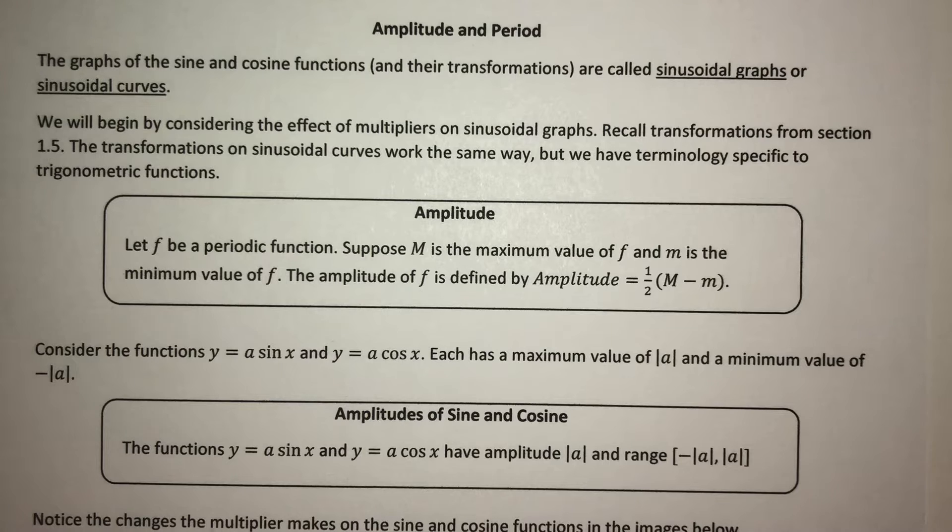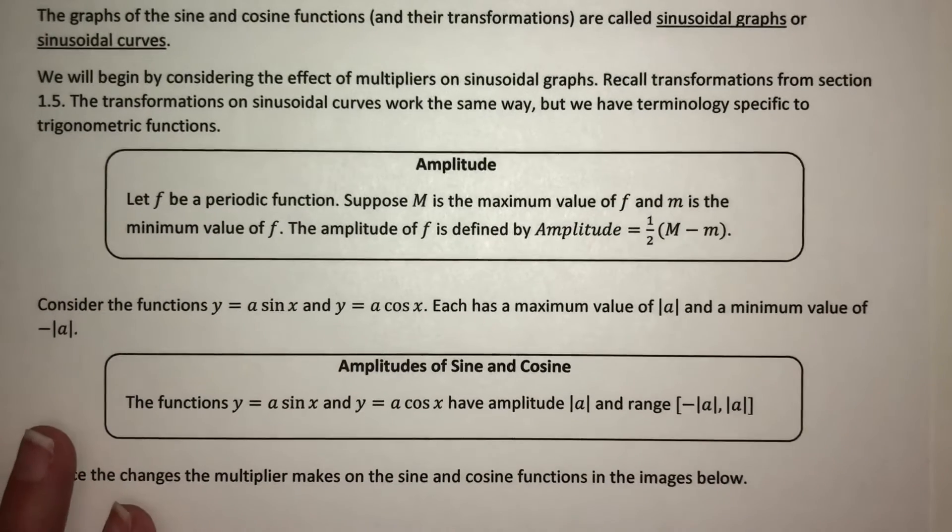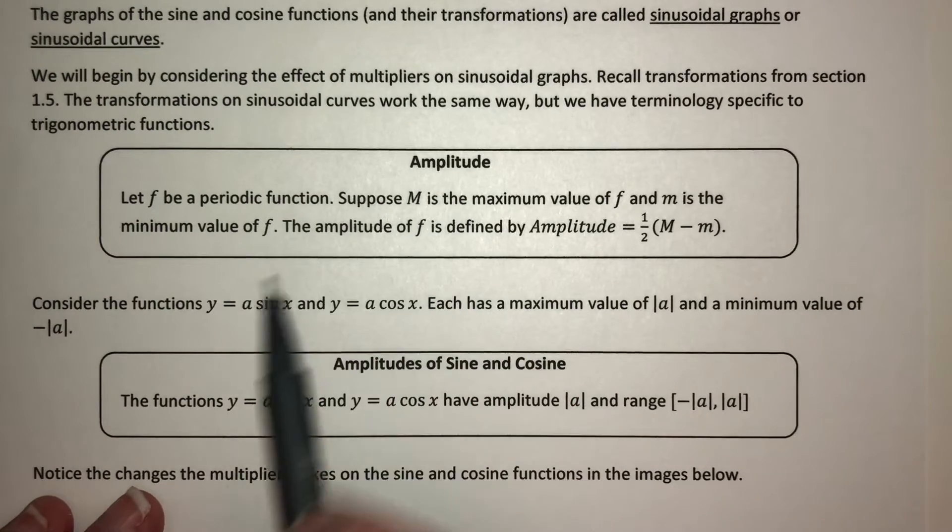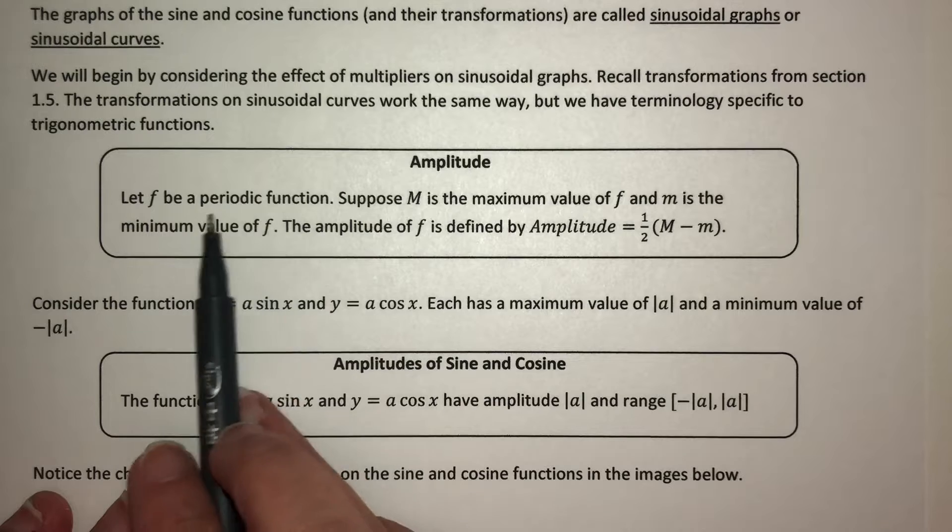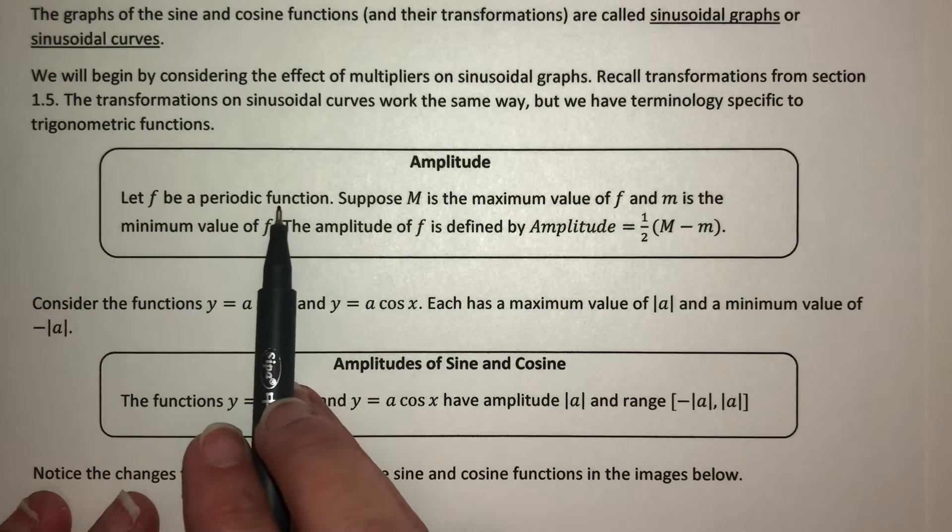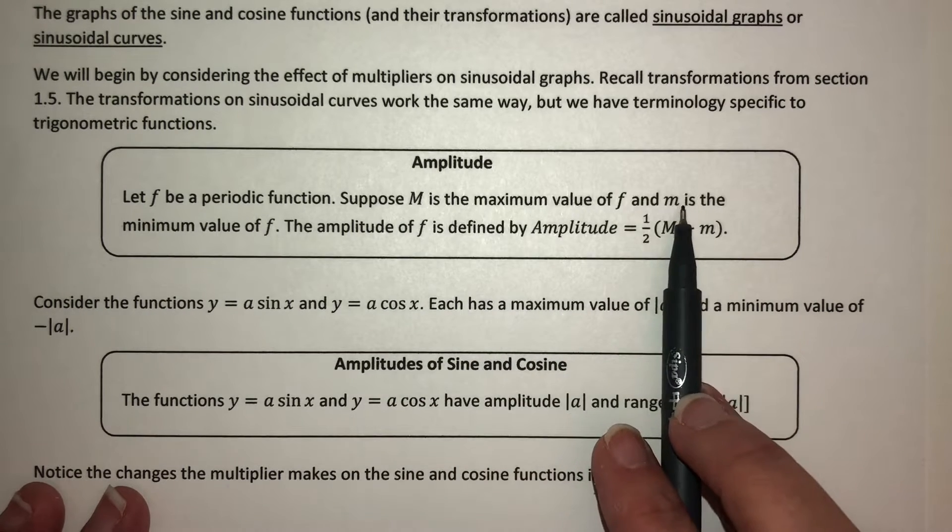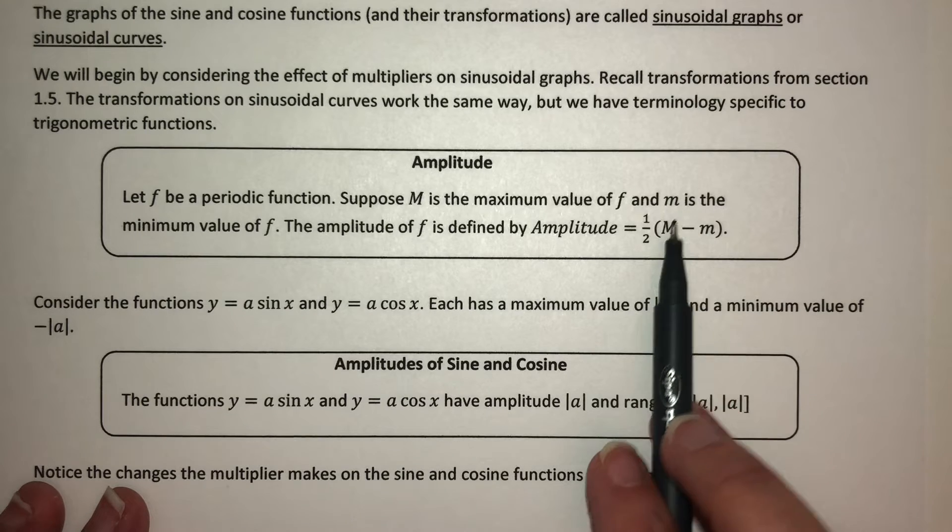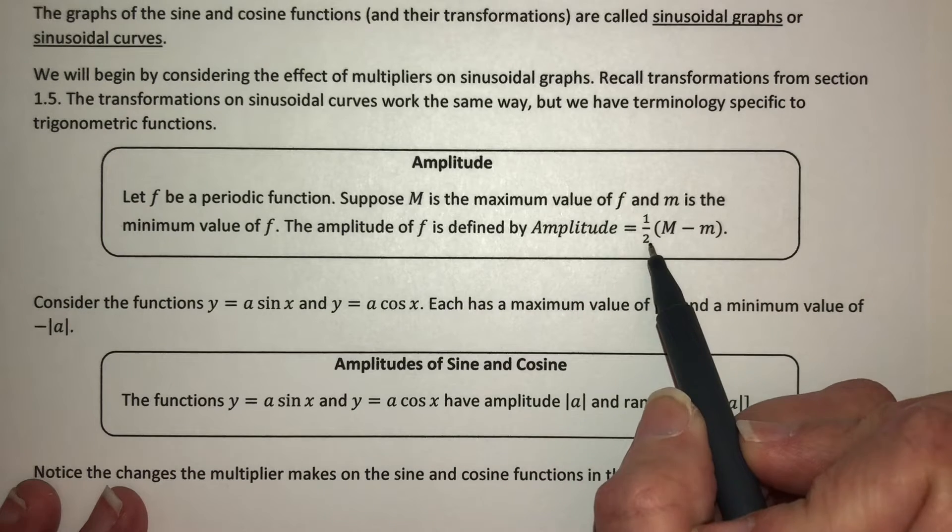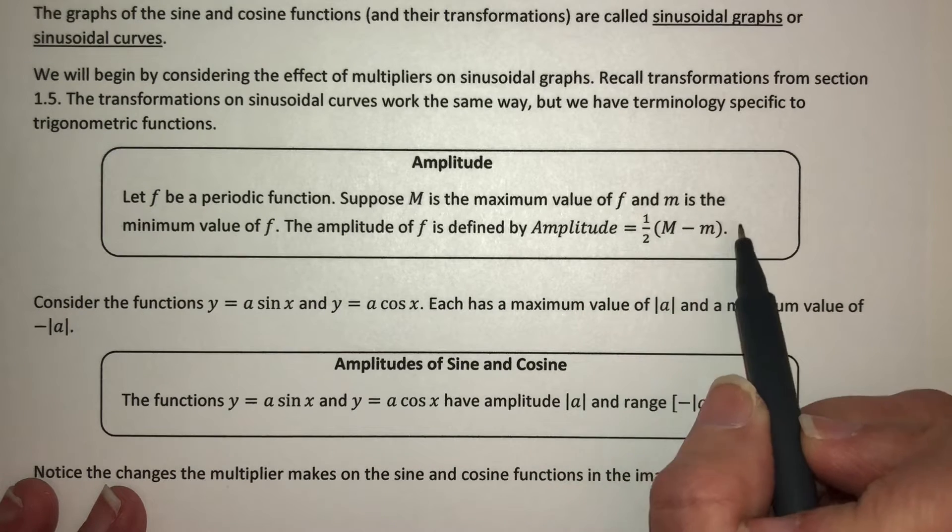We're going to consider the effect of multipliers on sinusoidal graphs. We're talking about the same kinds of transformations from section 1.5, and the transformations on these curves work the same way. Terminology is a little bit different. Definition: Amplitude. Let f be a periodic function. Suppose capital M is the maximum value of f, and lowercase m is the minimum value of f. The amplitude is defined by one-half of the maximum minus the minimum.